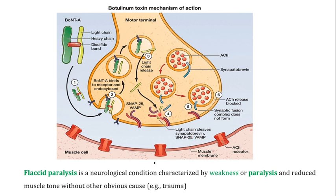When these SNARE proteins are broken down, the neurotransmitter vesicle loses the ability to interact with the membrane of the presynaptic neuron. The synaptic fusion complex does not form because its members have been degraded by the light chain of the botulinum toxin. This means the release of acetylcholine is blocked — there is no acetylcholine released into the synaptic cleft, no attachment to acetylcholine receptors, and therefore no muscular contraction.